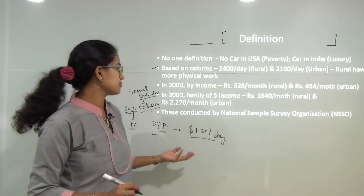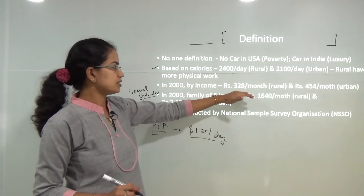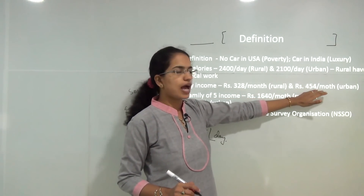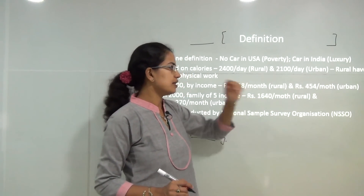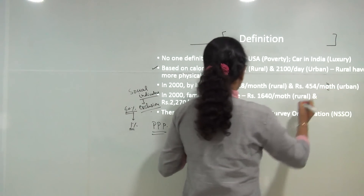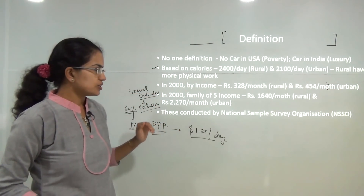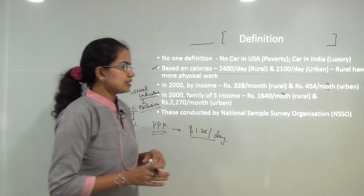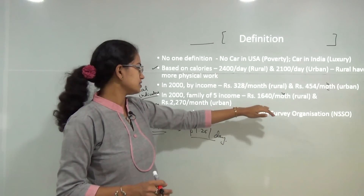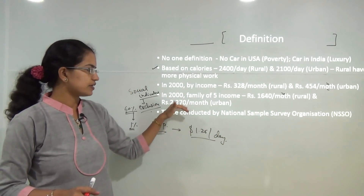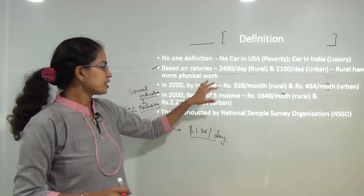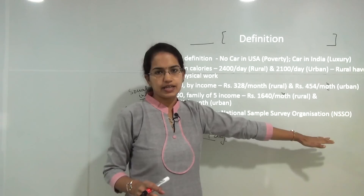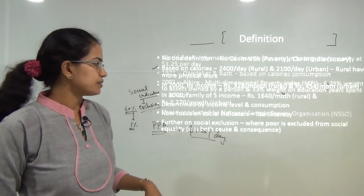Based on income, the 2000 benchmark was set at rupees 328 per month in rural areas and rupees 454 per month in urban areas. For a family of five, this was rupees 1640 for rural and rupees 2270 for urban areas. These indicators were established after an extensive survey by the NSSO, the National Sample Survey Organization.